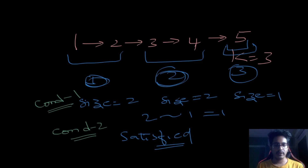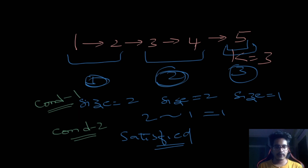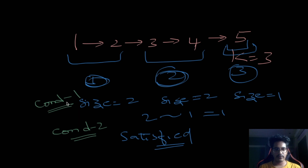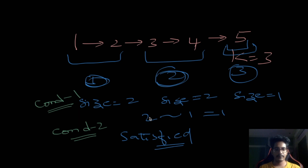Let's see this problem statement with an example. We are given a linked list which is 1, 2, 3, 4, 5 — of size five — and k is given as three. We have to split this linked list into three parts: one and two as one part, three and four as one part, and five as one part. Condition one: the difference between sizes should not be greater than one. The first split has size two, the second has size two, and the third has size one — the difference is one, so the condition is satisfied.